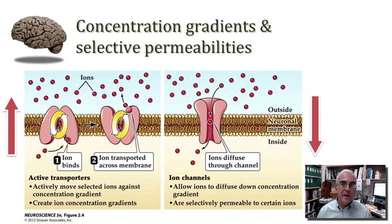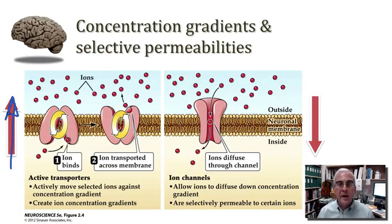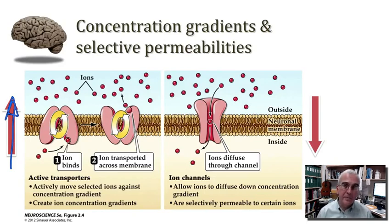One type of protein is an ion pump or ion transporter, illustrated on the left-hand side of this slide. What these pumps and transporters do is translocate ions from a region of low concentration to a region of high concentration — pumping ions against a concentration gradient. As this molecule binds an ion from a region of low concentration inside the cell and delivers it to a region of high concentration, there is consumption of energy. For that reason, we consider this an example of active transport.